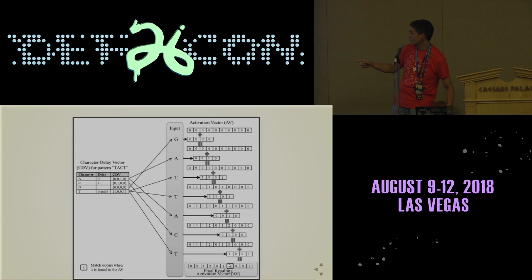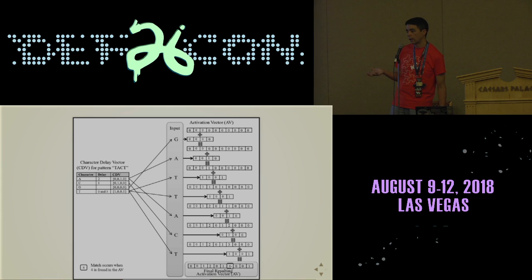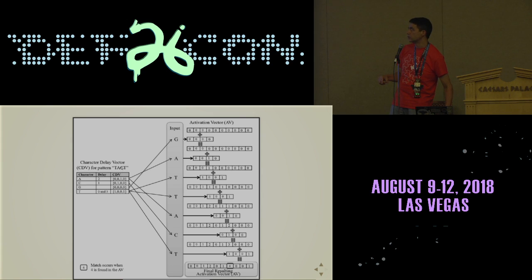What happens is that the value corresponding to the end of the pattern lands right where the length of the pattern you want would be. If you want a wildcard situation, you actually look for one less. So, say instead of looking for TACT, if you just wanted T, A, and then anything, A, G, A, C, G, and T — then instead of looking for a four, you'd look for a three.